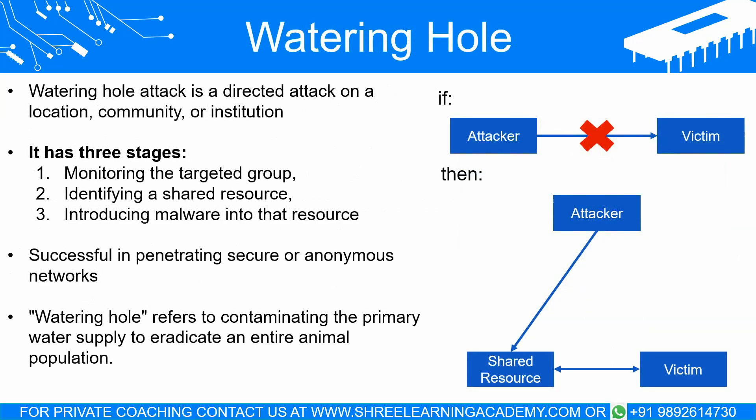A watering hole attack is a specific type of directed attack aimed at a particular geographic location, community, or institution. It involves three principal stages: the first involves monitoring the behaviors of the targeted individuals or group to identify a shared resource, website, or physical location frequently accessed by one or more members of the target, which is then used as the watering hole. The second phase entails introducing malware into the systems associated with the watering hole. In the third phase, the attackers wait for members of the targeted group to return to the infected watering hole and unwittingly introduce the malware back into their network. The term watering hole is a metaphorical reference to eradicating an entire animal population by contaminating their primary water supply, and this method has proven relatively successful in penetrating secure or difficult-to-access groups or anonymous networks.